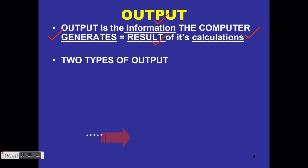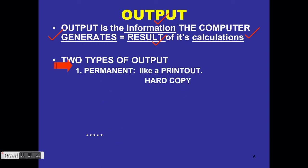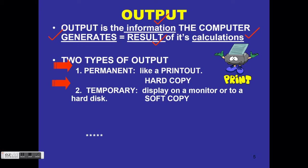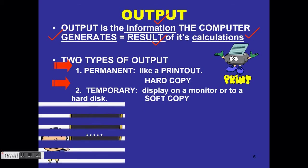We get two types of output. Permanent output, like a printout, is called a hard copy — such as a printed page. Temporary output, displayed on a monitor, stored on a hard disk, optical disk such as a DVD or CD, or viewed on a smartphone or tablet, is called a soft copy.